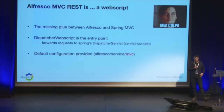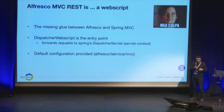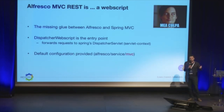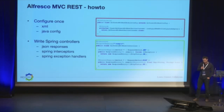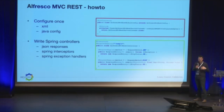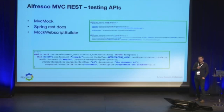The Alfresco MVC dispatcher for REST is actually a web script — that's the main entry point. By default it's configured to Alfresco/service/MVC. It takes the rest of the URL and all the parameters and transfers them to the Spring dispatcher servlet. We have a new servlet context. You can use Java config or XML config — it's completely integrated inside Alfresco. Then you just write normal Spring controllers. When you need a new REST API, you write a request mapping, choose POST, GET, or whatever. You also get Spring interceptors and the full Spring MVC stack.